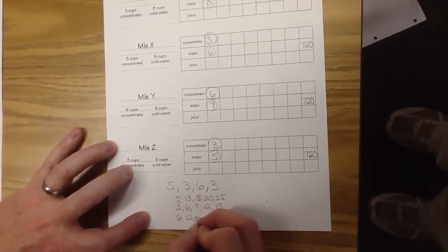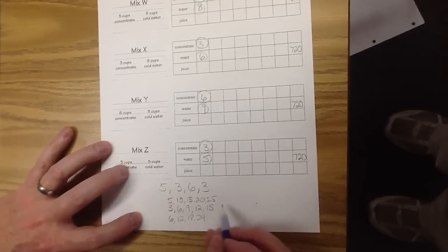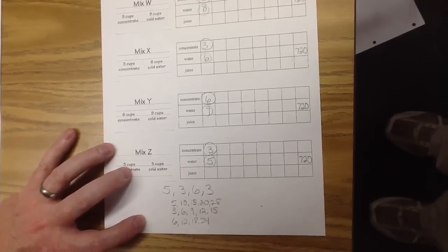6, 12, 18, 24, and so on, until you find a number that's in all three lists.